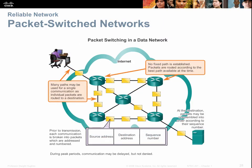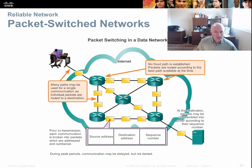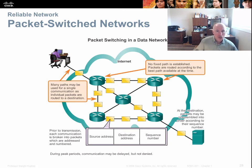In a packet-switched network, packets can be switched through the network with their path changing direction as needed. Packet-switched networks don't have a fixed path — they're routed at the time they are sent, much like an envelope through the postal system. This allows routers to make different path decisions on a moment-by-moment basis, load-balance links, and work around outages. If a cable fails, routers can choose a new path for the remaining packets.